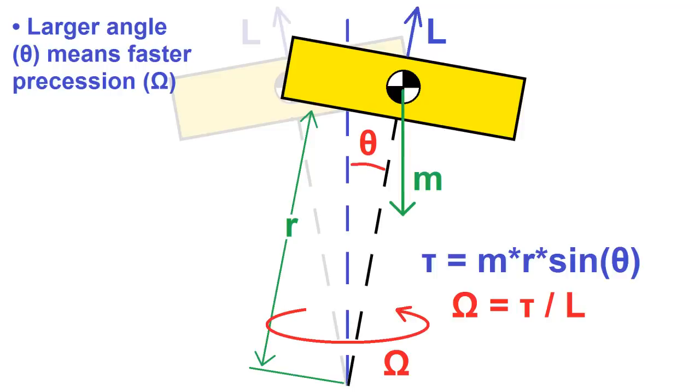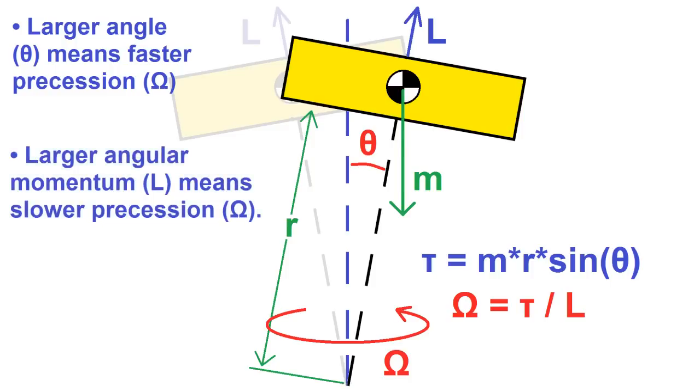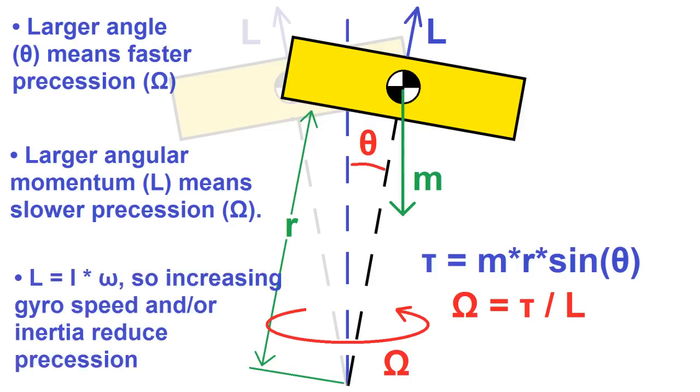You've probably seen this with a spinning top. As it starts to fall over, the precession becomes faster until it finally hits the floor and stops altogether. The formula for Omega also shows that having a larger angular momentum means that a given torque will cause less precession, so the goal is to have a big heavy wheel spinning as fast as possible for maximum stability.